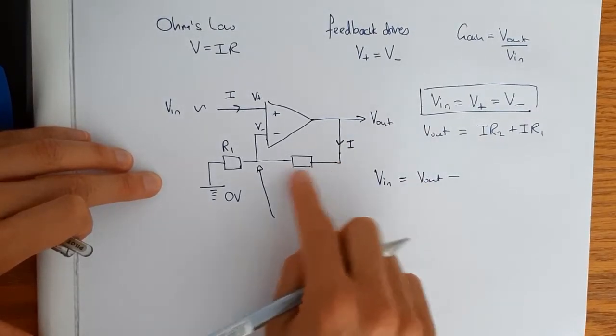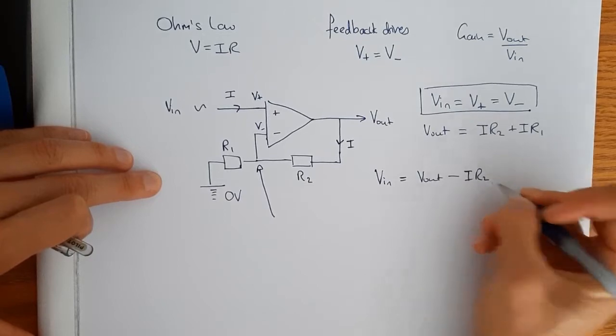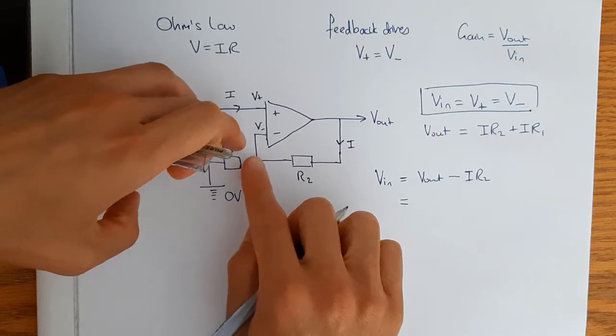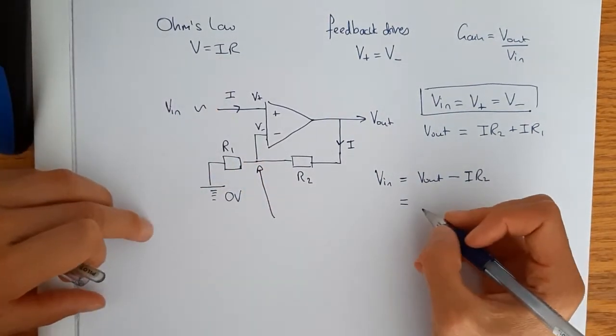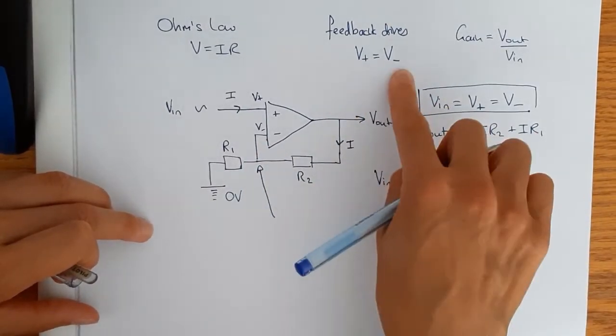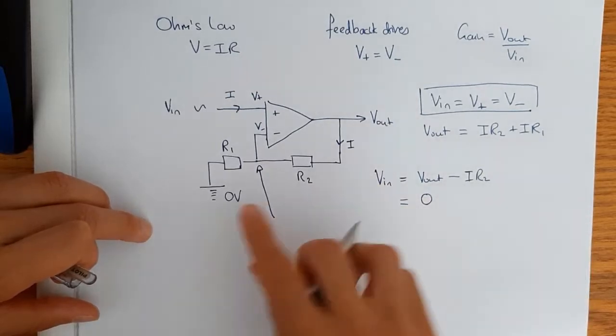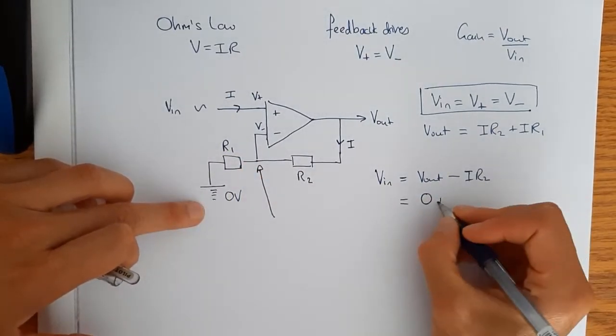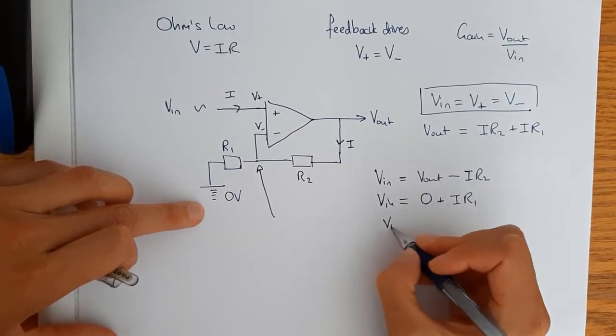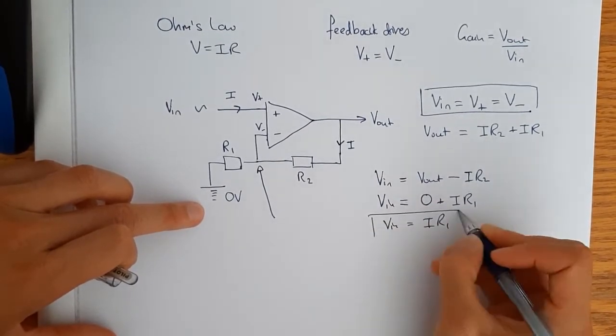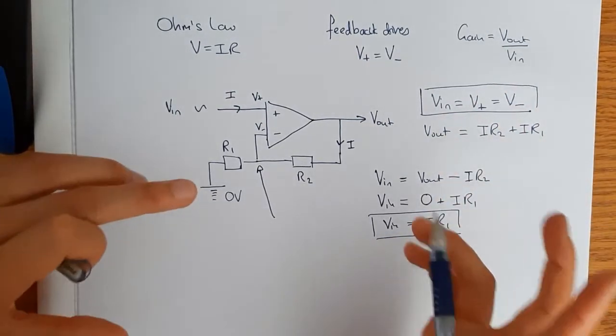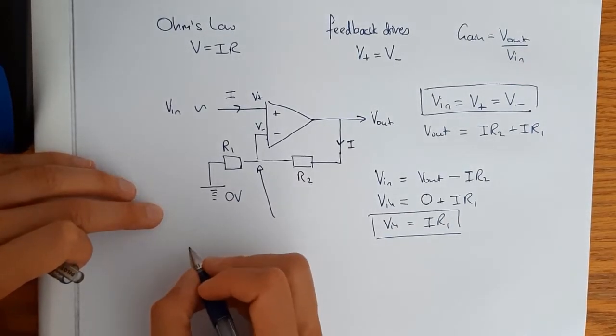So V_in we know is equal to V plus and feedback drives V plus to be equal to V minus. So we can work out what the voltage here is because that's going to be the same as V_out minus what it's lost over here which is I R2. But that's also going to be the same as what we have here is V minus is going to be, so V minus because V_in is equal to V plus which is equal to V minus. And V minus is going to be equal to zero plus I R1. And this expression here V_in is equal to I R1 will now allow us, well either of these expressions, will allow us to solve this because we have two equations that we can solve.